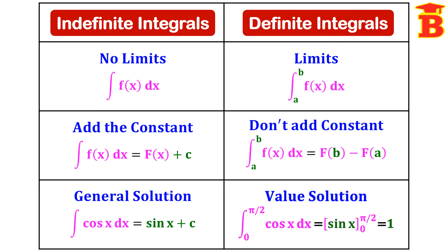These are the three differences between indefinite integrals and definite integrals. In indefinite integrals we don't have limits, whereas in definite integrals we must have limits. In indefinite integrals we add the constant plus C, whereas in definite integrals we don't add the constant — instead we apply the limits. In indefinite integrals we finally get a function, that is a general solution, whereas in definite integrals we finally get a value — a number.